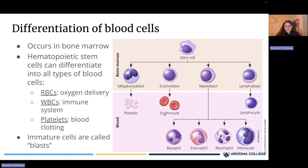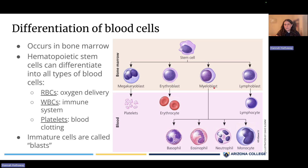Once the stem cell differentiates into the second phase, all of these cells end in 'blast' — like megakaryoblast or lymphoblast. These in-between cells are called immature cells or blasts for short. This is important because in some types of blood cancer, you see a proliferation of these immature cells — an increased number of blasts — and that is a sign that someone has a blood cancer.